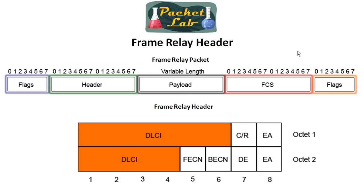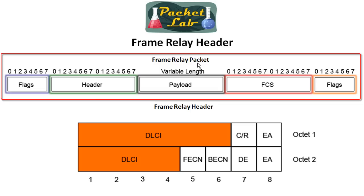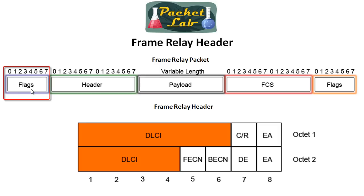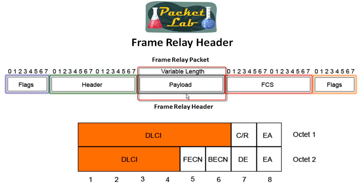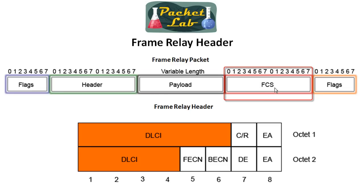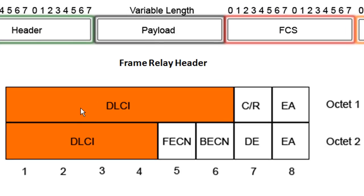Now a quick look at the frame relay header. This is actually a frame relay frame, not a packet. You can see there's a header portion — this is the encapsulation. It starts with a flag to indicate the beginning of the frame relay frame, and ends with a flag to say we're done. You have the header, the payload which is your layer 3 and above information and is variable length, and then the FCS — frame check sequence — which is the basic error checking mechanism. Breaking down the header, it has a number of fields including congestion features we'll go into later. The DLCI, highlighted in orange, actually consists of two fields: the first is six bits and the last is four bits, always used together as that 10-bit value.